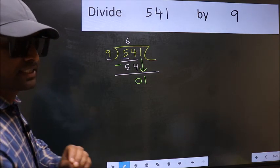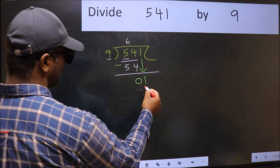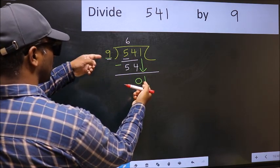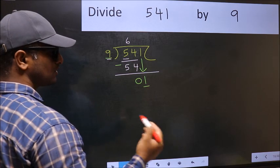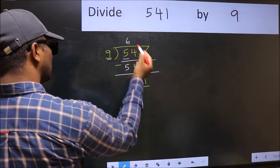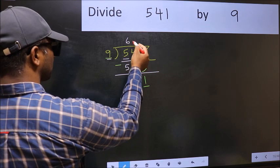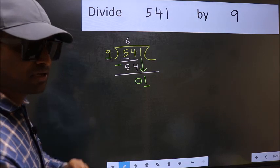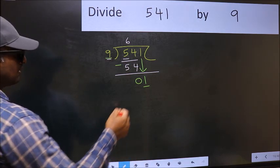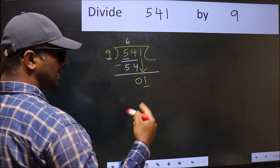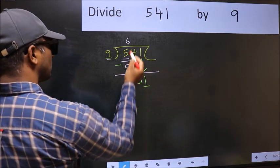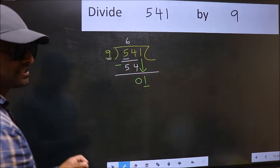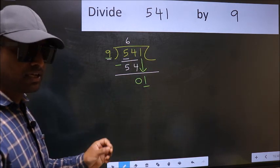And the mistake is this. Here we have 1 and here 9. 1 is smaller than 9. So what many do is they directly put dot and take 0, which is wrong. Why is it wrong? Because just now you brought this number down. And in the same step, you want to put dot and take 0, which is wrong.